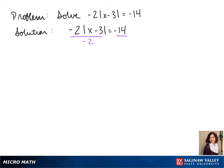Our first step is to get the absolute value by itself, so we divide both sides by -2, and we get the absolute value of x minus 3 equals 7.